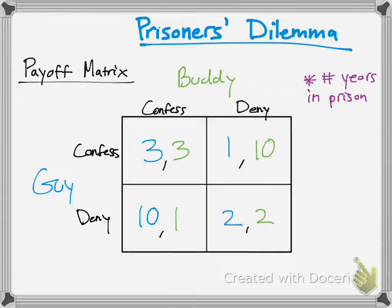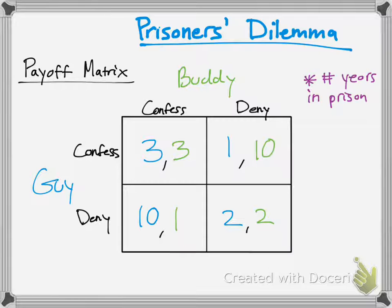There are two options: Guy could confess or deny, and Buddy could confess or deny. The numbers in this payoff matrix represent the number of years in prison. If Guy confesses and Buddy also confesses, they each get three years. If Buddy confesses and Guy denies, Buddy gets one year and Guy gets ten years. If Guy confesses and Buddy denies, Buddy gets ten years and Guy gets one. If they both deny, they each get two years.